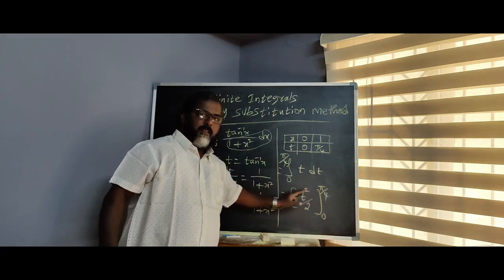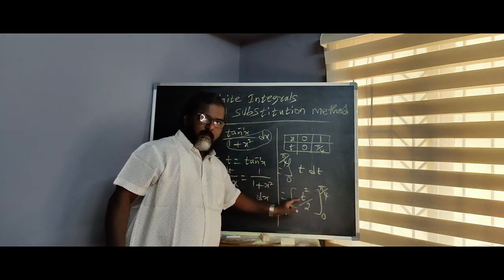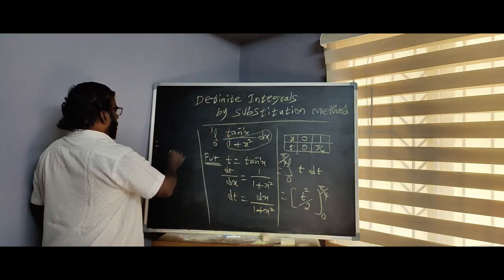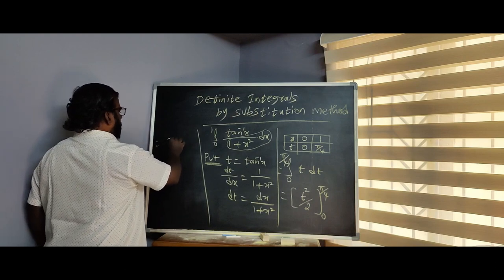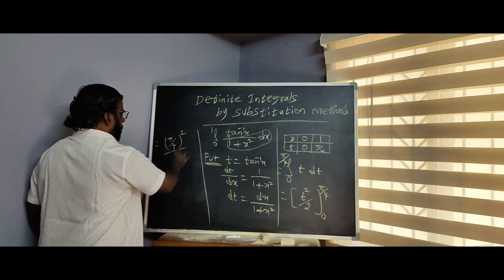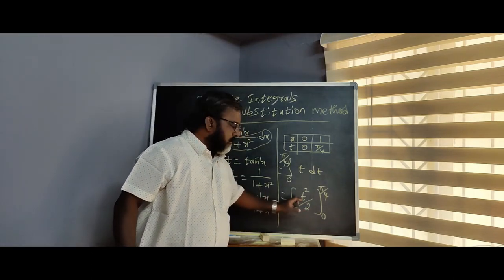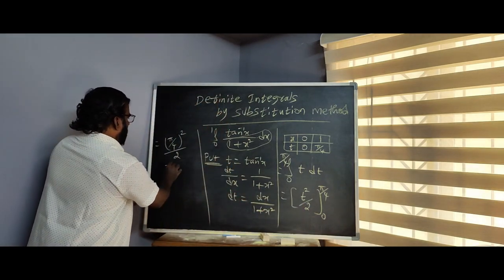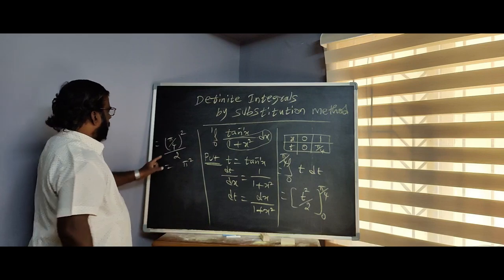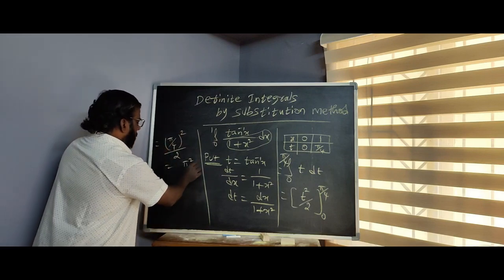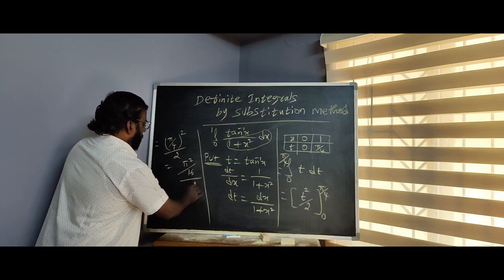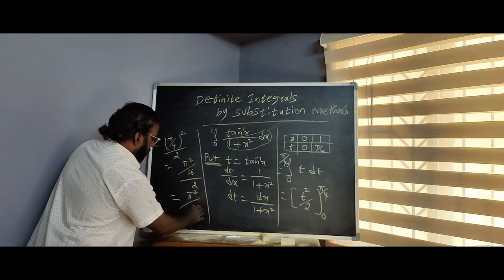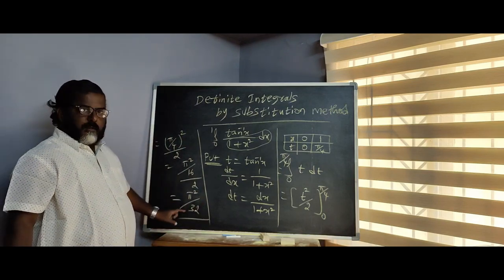Substituting the limits — upper limit minus lower limit. At t equals pi by 4: (pi by 4) whole squared divided by 2. At t equals 0: 0 squared by 2 equals 0. So we get pi squared divided by 16, divided by 2, which equals pi squared by 32. That is the answer: pi squared by 32.